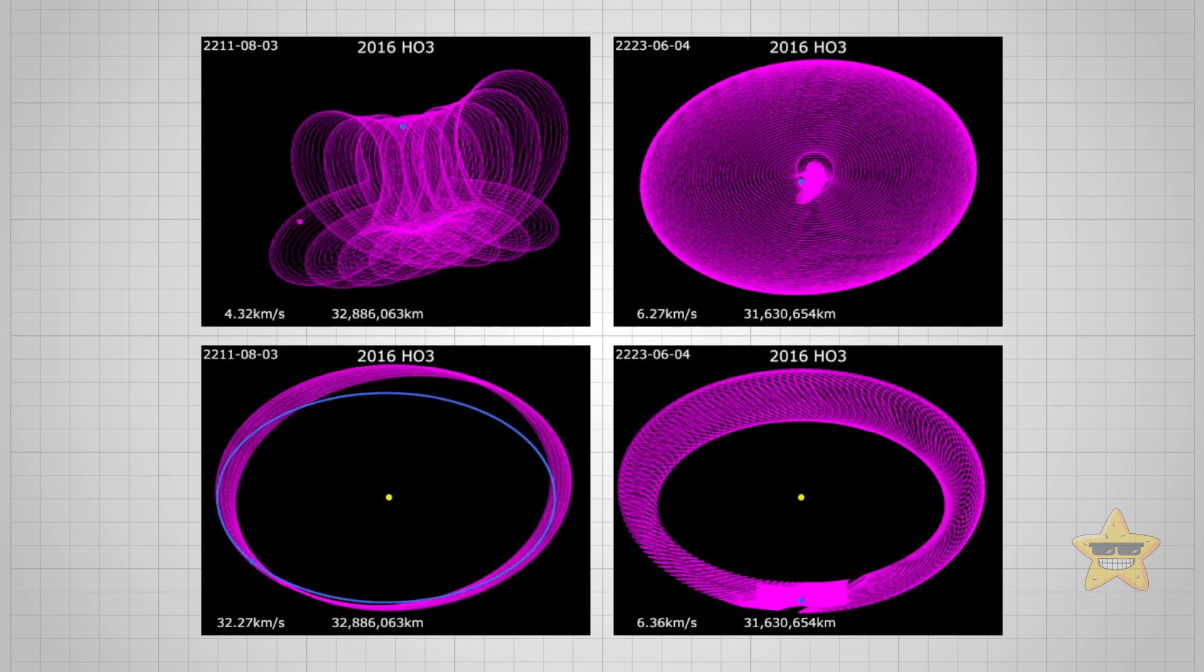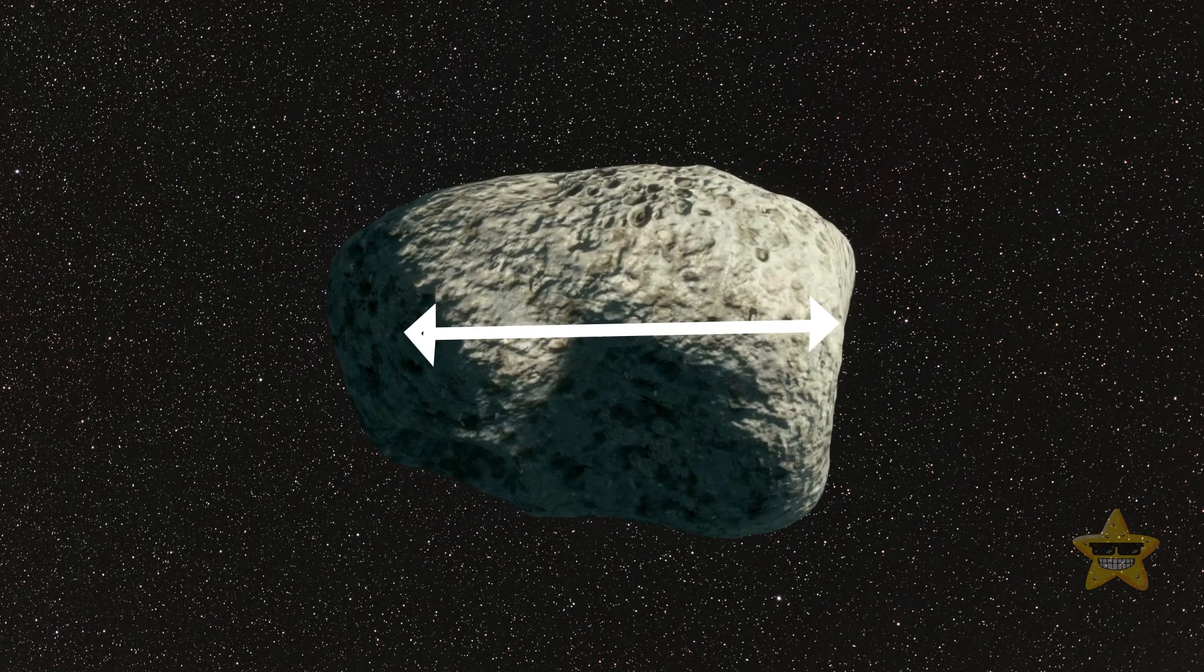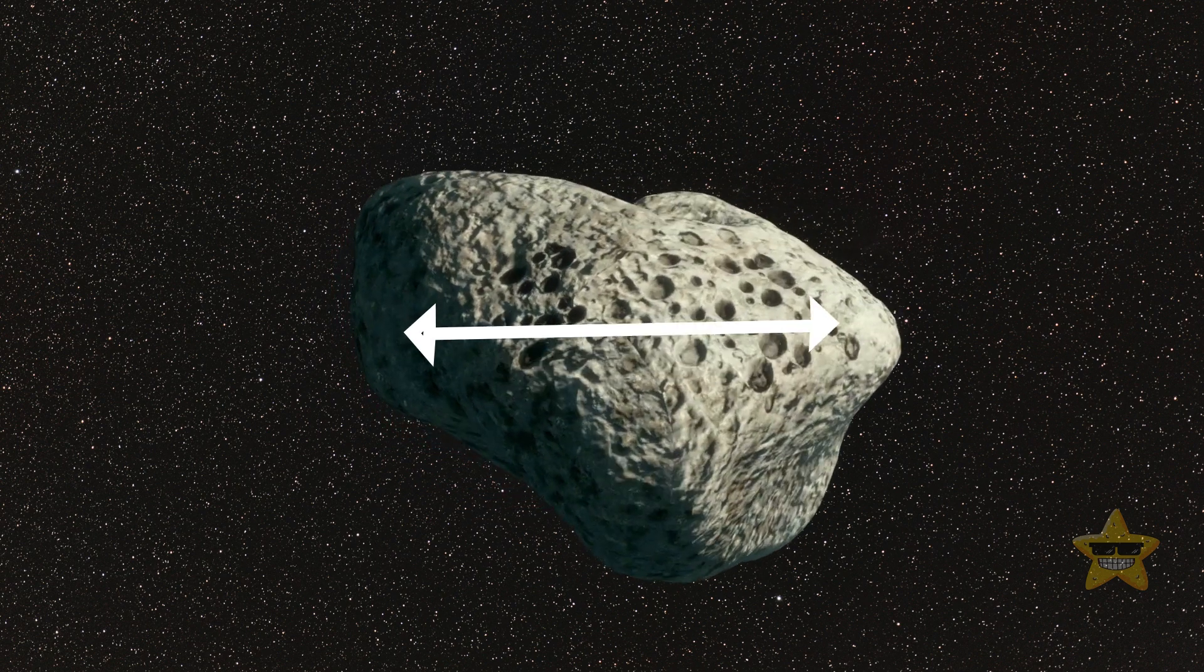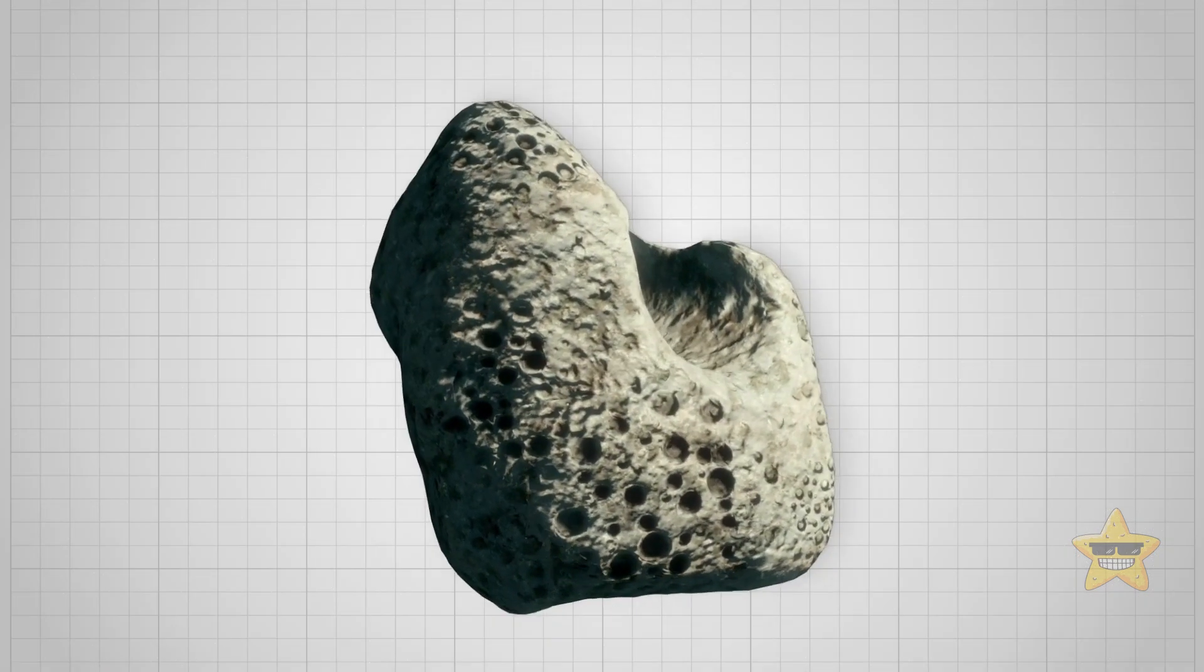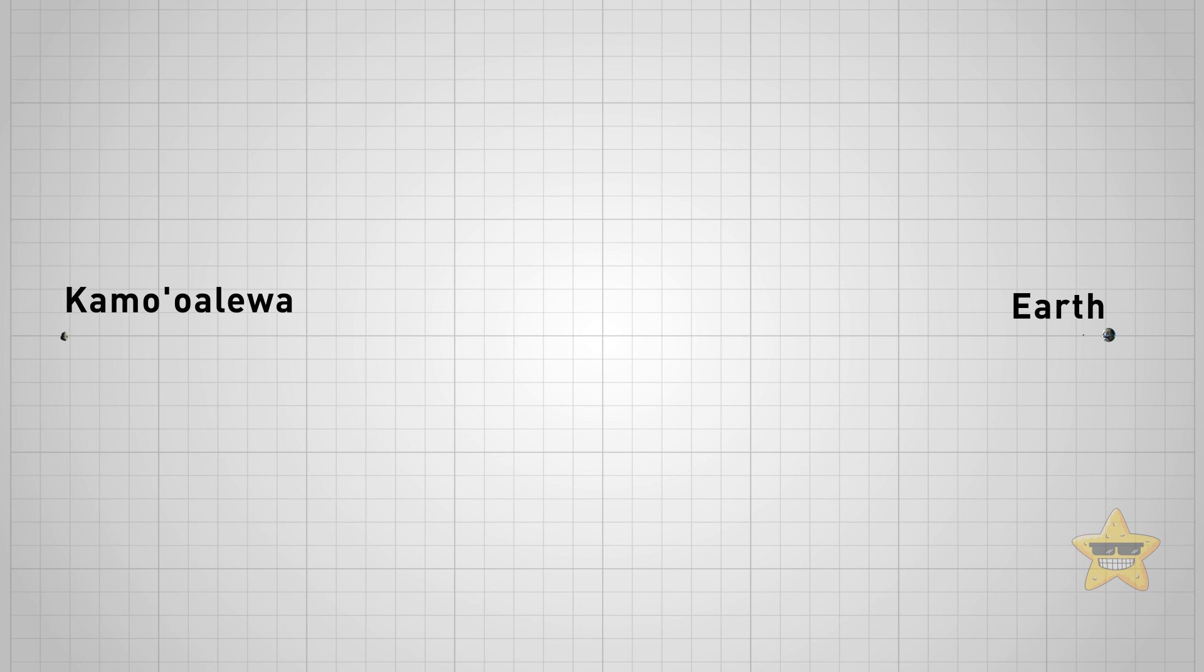At its closest, the 130-foot wide asteroid gets to the distance of around 40 times that of the moon. According to the results of orbital analysis, the rock has been following Earth for at least 100 years.